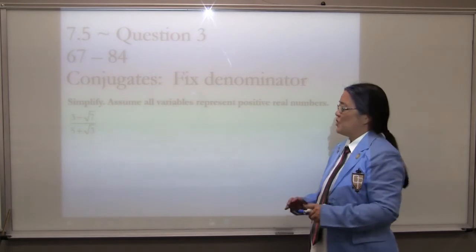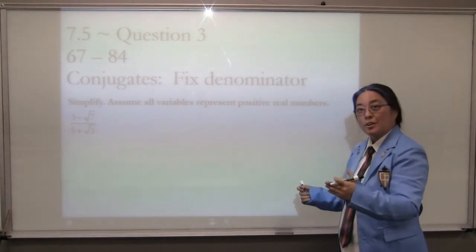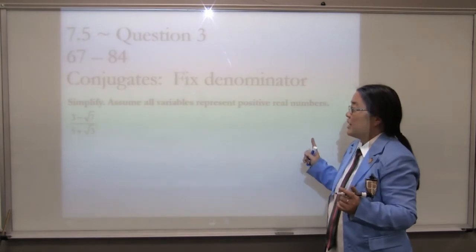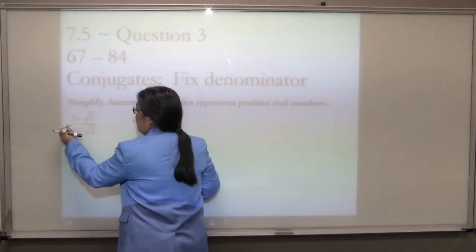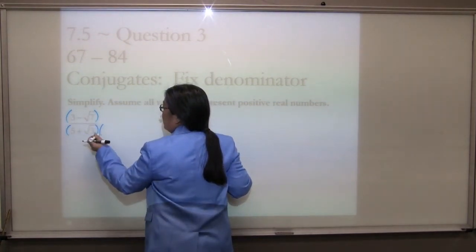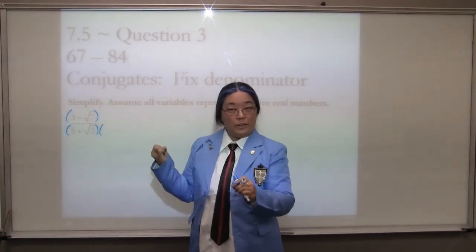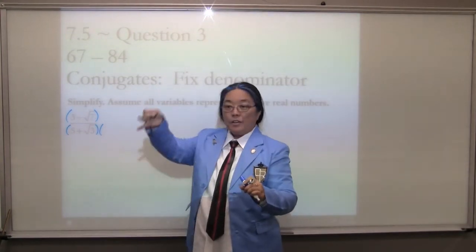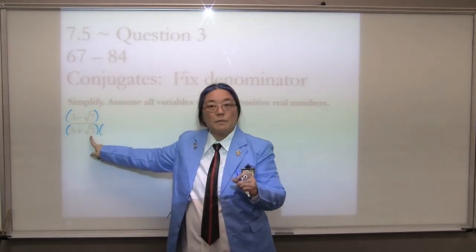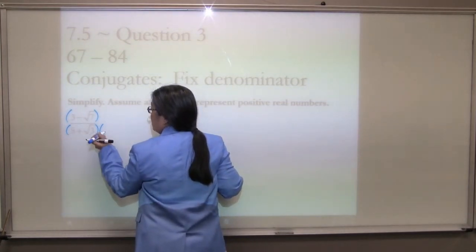Chapter 7, Section 5, Question 3: Conjugates. Do you remember conjugates from a few slides ago from Chapter 5? We have been setting you up for this lesson right here. Conjugate was change the middle sign. These are binomials. I strongly recommend that you put these parentheses around them. And then we look at the denominator, because for simplified radical form, if you can simplify it, you've got to simplify it. If you have a radical in the denominator, that is bad — we have to fix it. The way we fix it is to use the conjugate, which is same thing, change the middle sign.